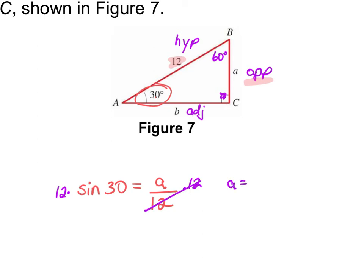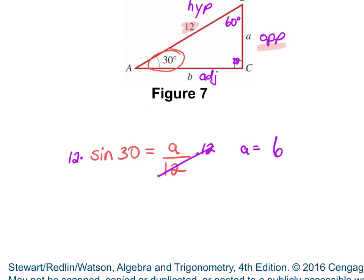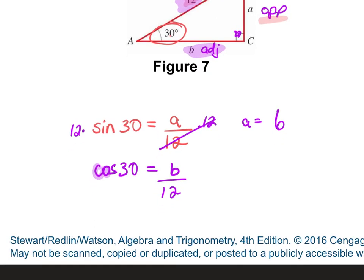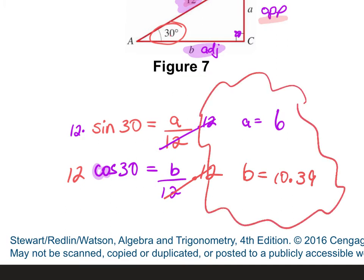In your calculator, hit 12 times sine of 30. You get 6. Now to find B: B is adjacent, and I know the hypotenuse. The trig function using adjacent and hypotenuse is cosine. Cosine of 30 equals B over 12. Multiply by 12, and B equals 12 times cosine of 30. Give two decimal places — that's 10.39.